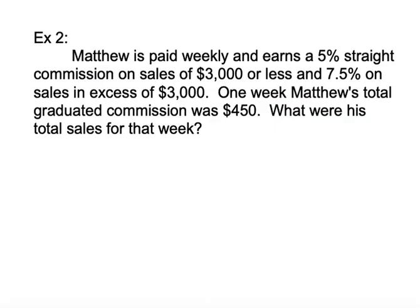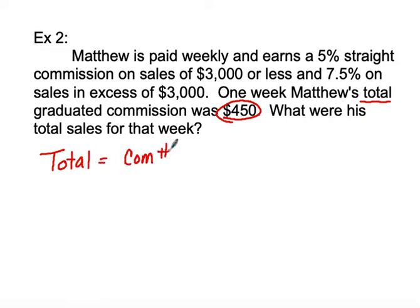If not, we're going to move on to example two. Matthew is paid weekly and earns a 5% straight commission on sales of $3,000 or less, and 7.5% on sales in excess of $3,000. One week, Matthew's total graduated commission was $450. That's his total commission — what were his total sales for the week?